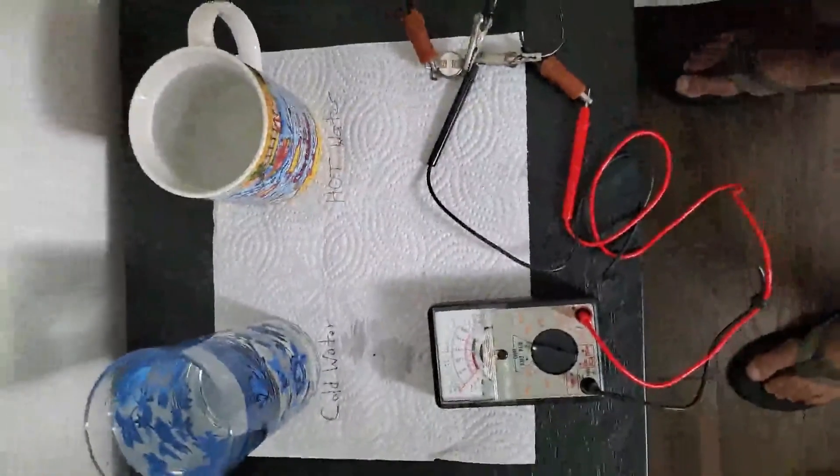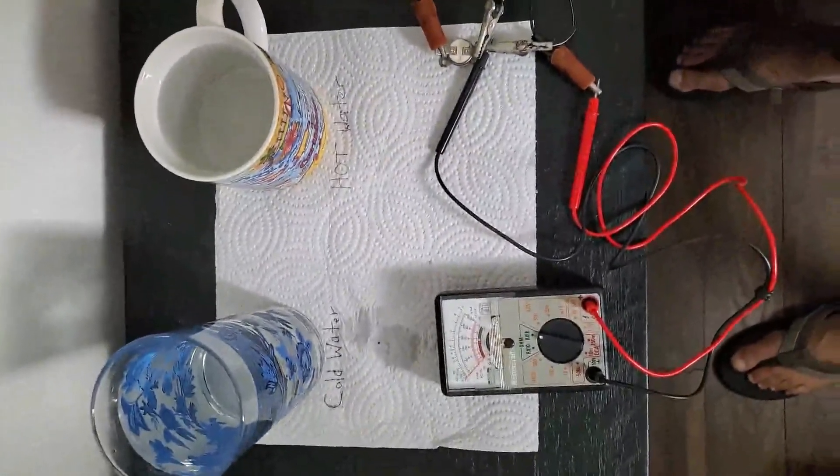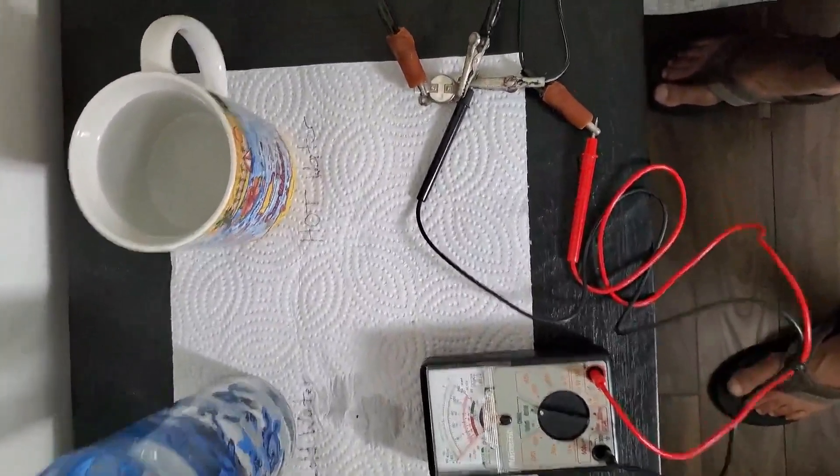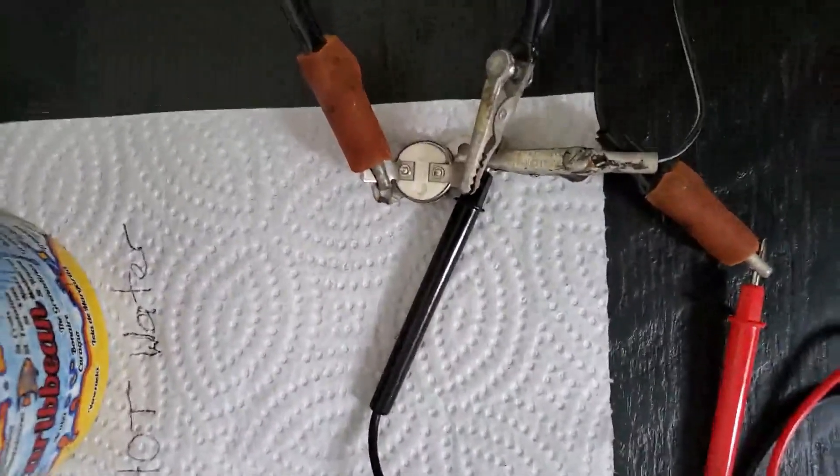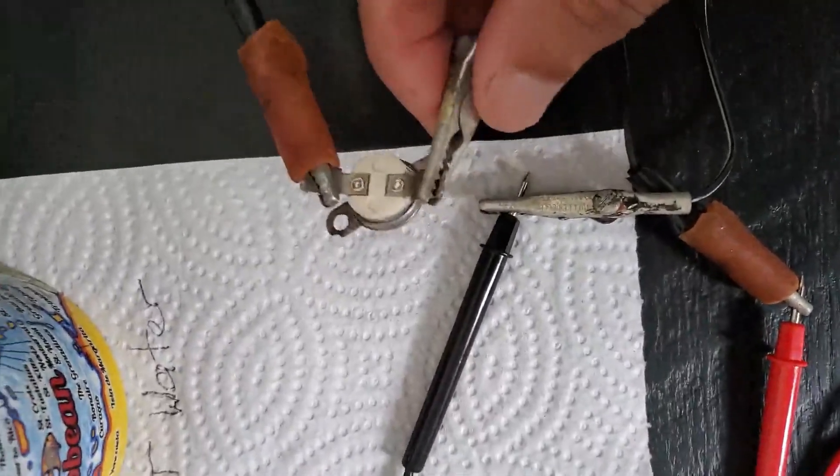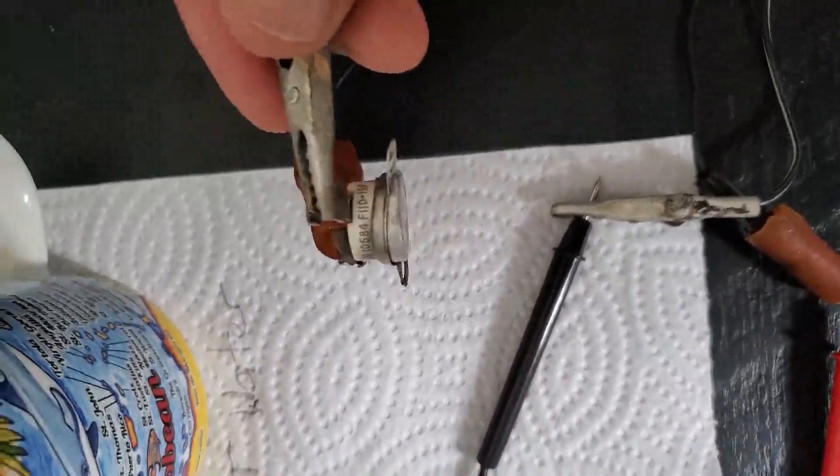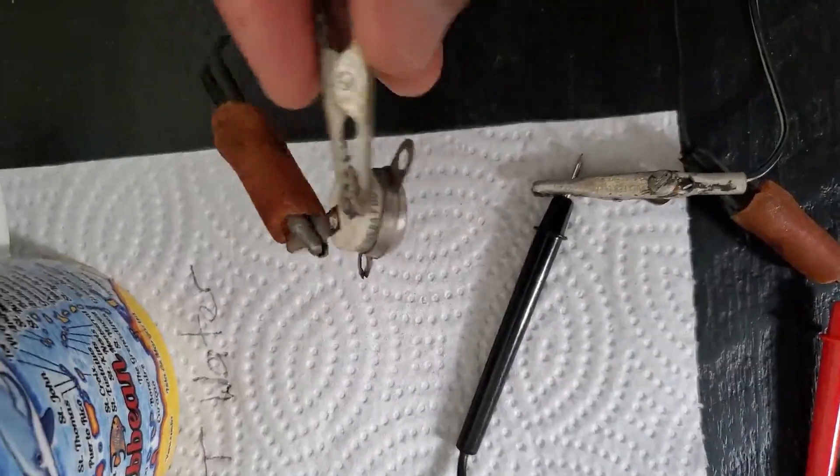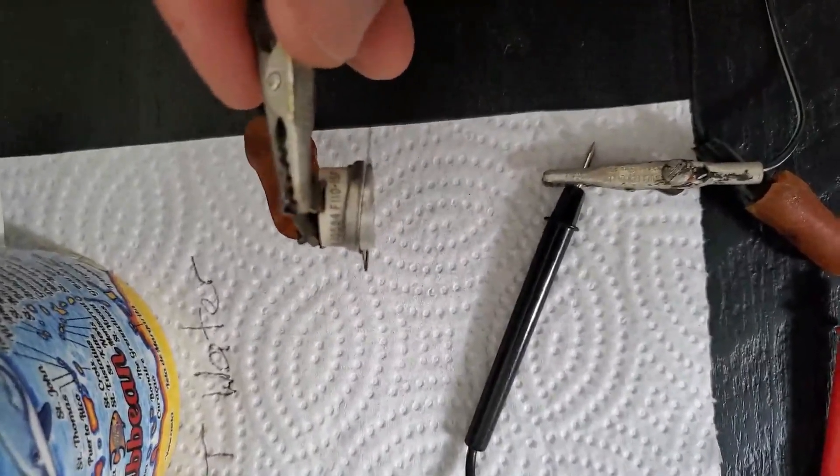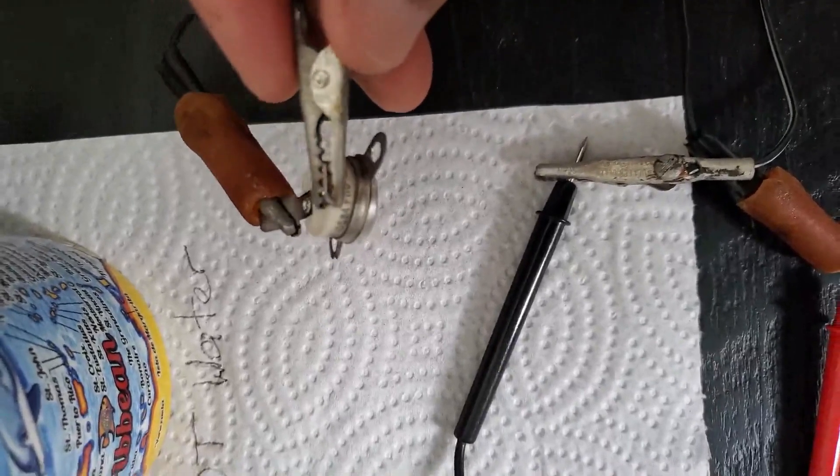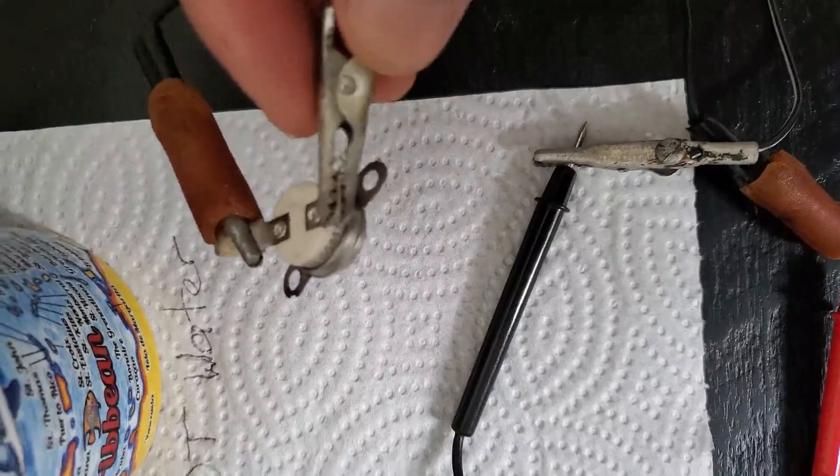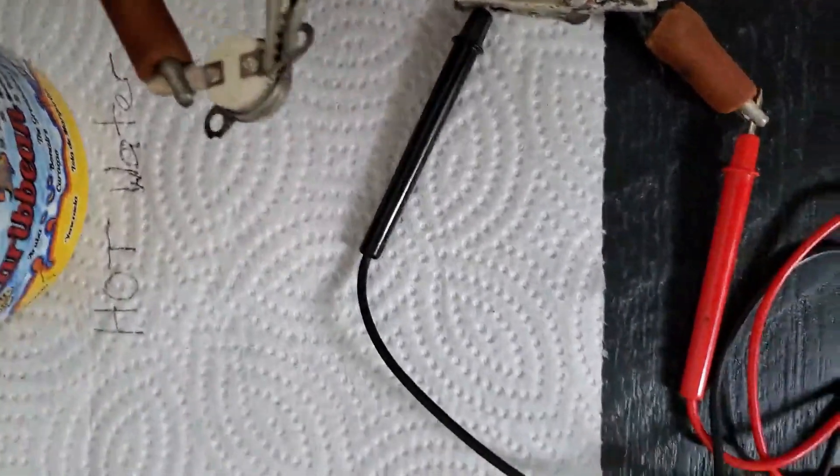So here's a setup to test your thermostat on your natural gas heating stove. This thermostat right here is a little button thermostat and it is supposed to turn on the fan when it heats up. As the stove gets hot, the fan turns on. As the stove cools off, the fan turns off.